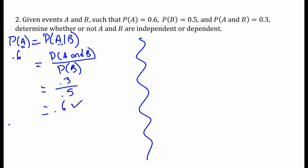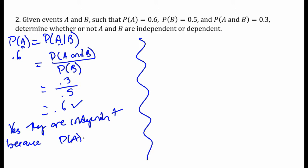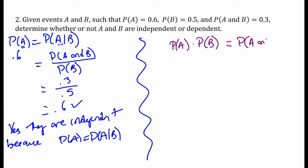Yes, they are independent events because the probability of A equals the probability of A given B — knowing that B happened didn't change the probability of A happening. The other way to do it, which is a bit more sneaky: if two events are independent, you can multiply their probabilities together, and that should give you their intersection. This only works if they're independent. If the statement is not true, they are dependent.